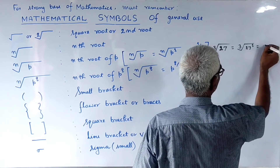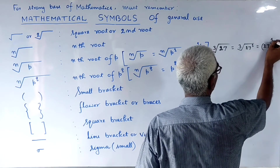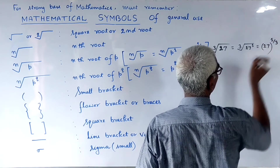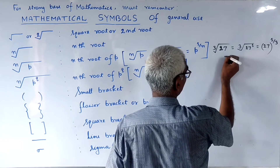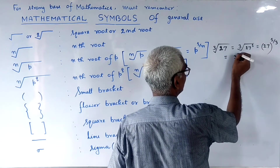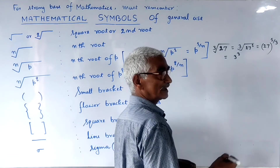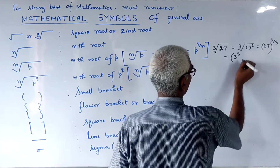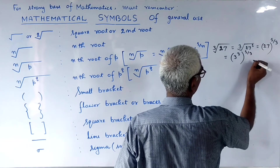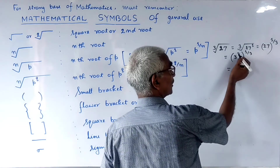The base is 27. The power will be 1 over 3 — the third root of 27 equals 27 to the power 1 by 3.